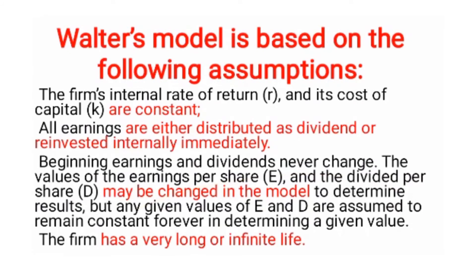Walter has given certain assumptions. First, the firm's internal rate of return and its cost of capital are constant. Second, all earnings are either distributed as dividend or reinvested internally immediately — you cannot split 50-50. Third, beginning earnings and dividend never change. The values of earnings per share (E) and dividend per share (D) may be changed in the model to determine results, but any given values of E and D are assumed to remain constant forever in determining a given value.